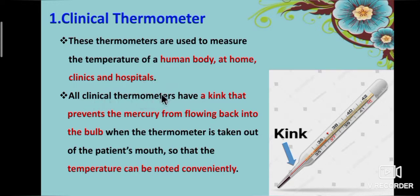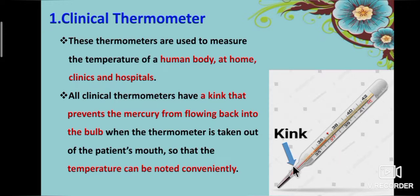Clinical thermometers are used to measure the temperature of the human body at home, clinics, and hospitals. All clinical thermometers have a kink that prevents the mercury from flowing back into the bulb when the thermometer is taken out of the patient's mouth, so that the temperature can be noted conveniently.